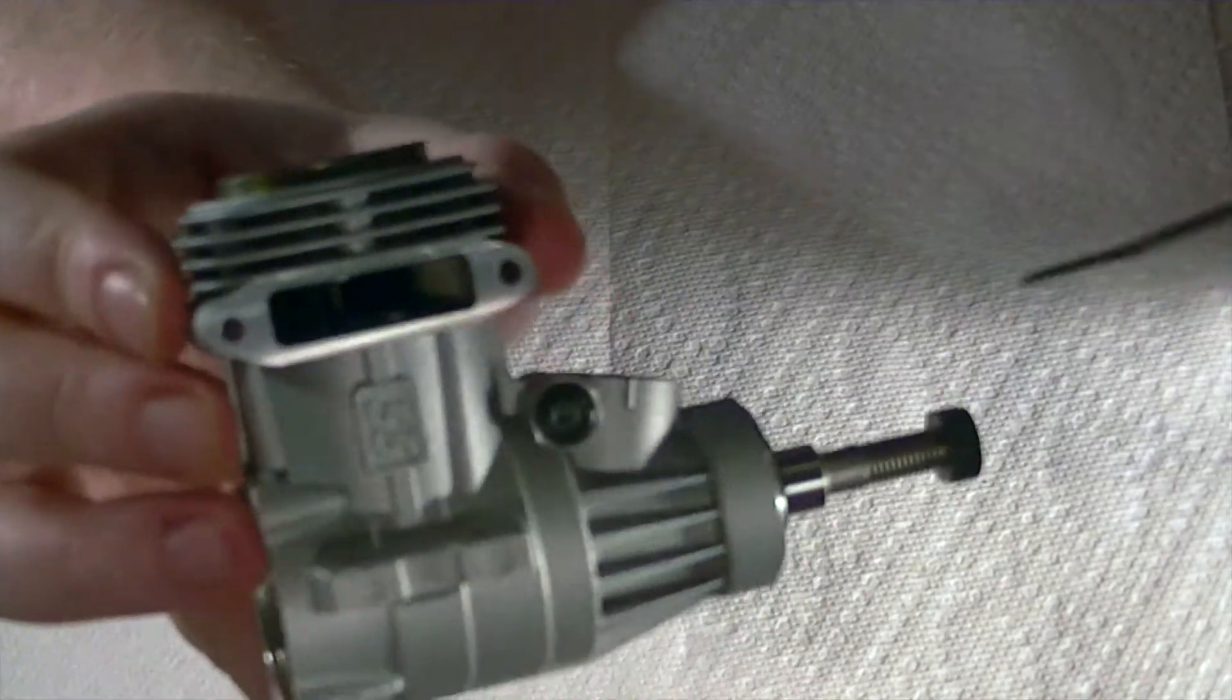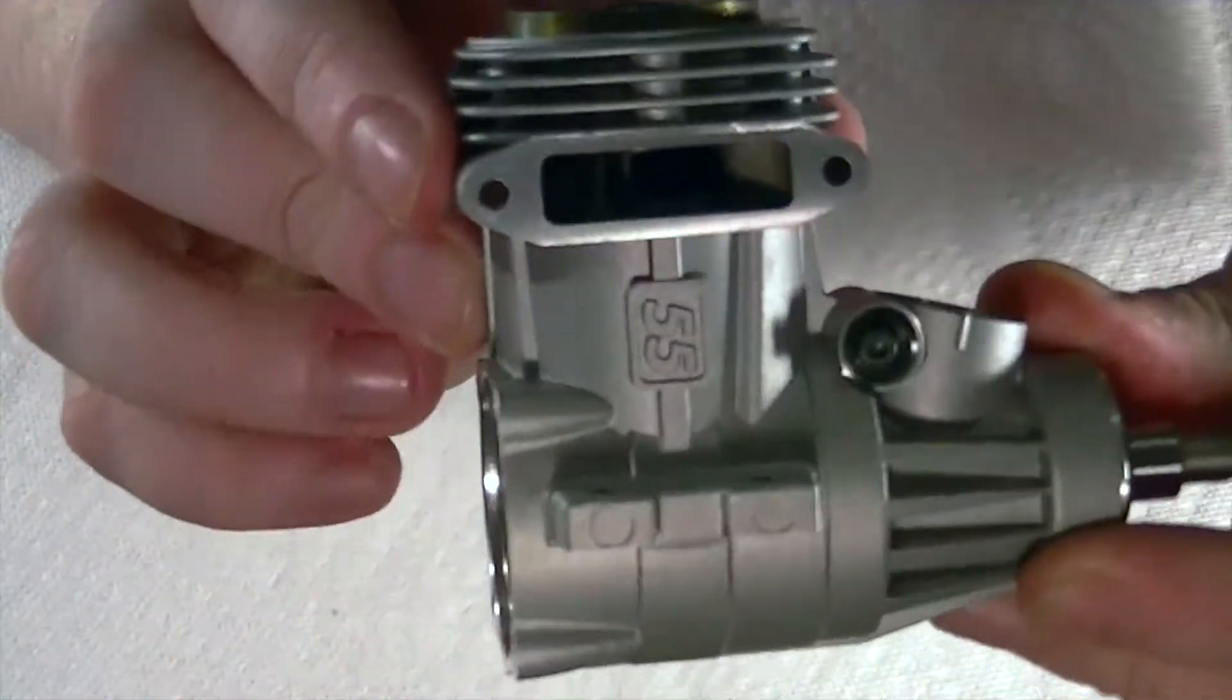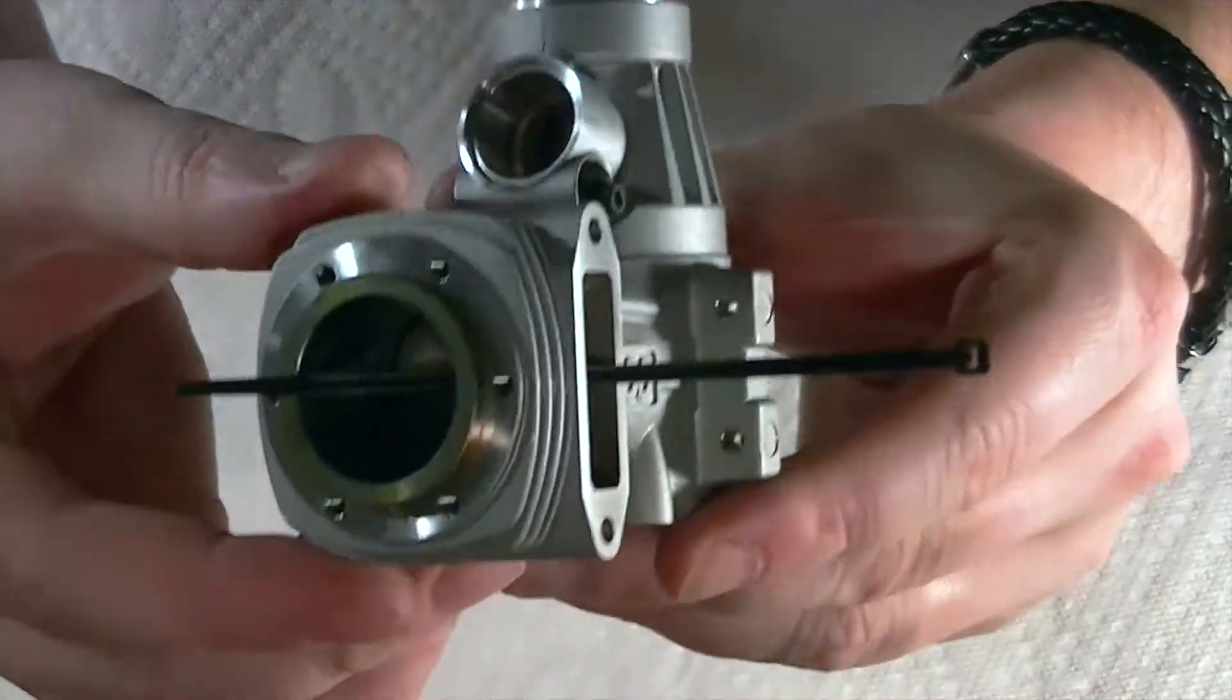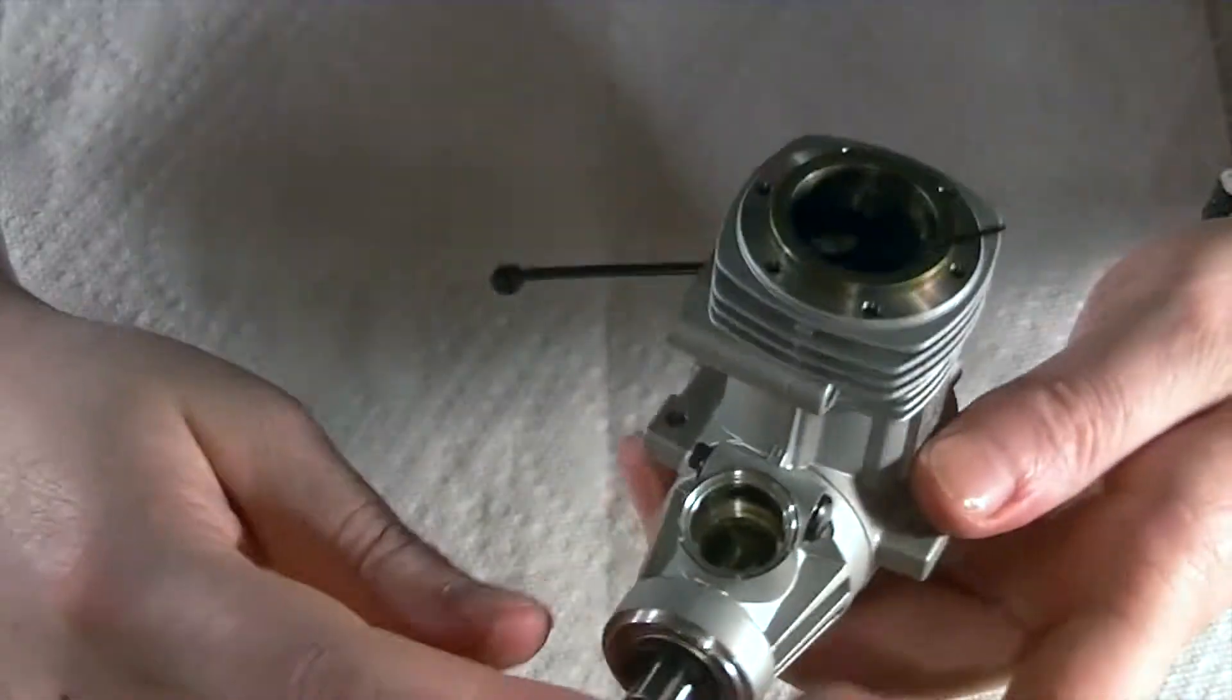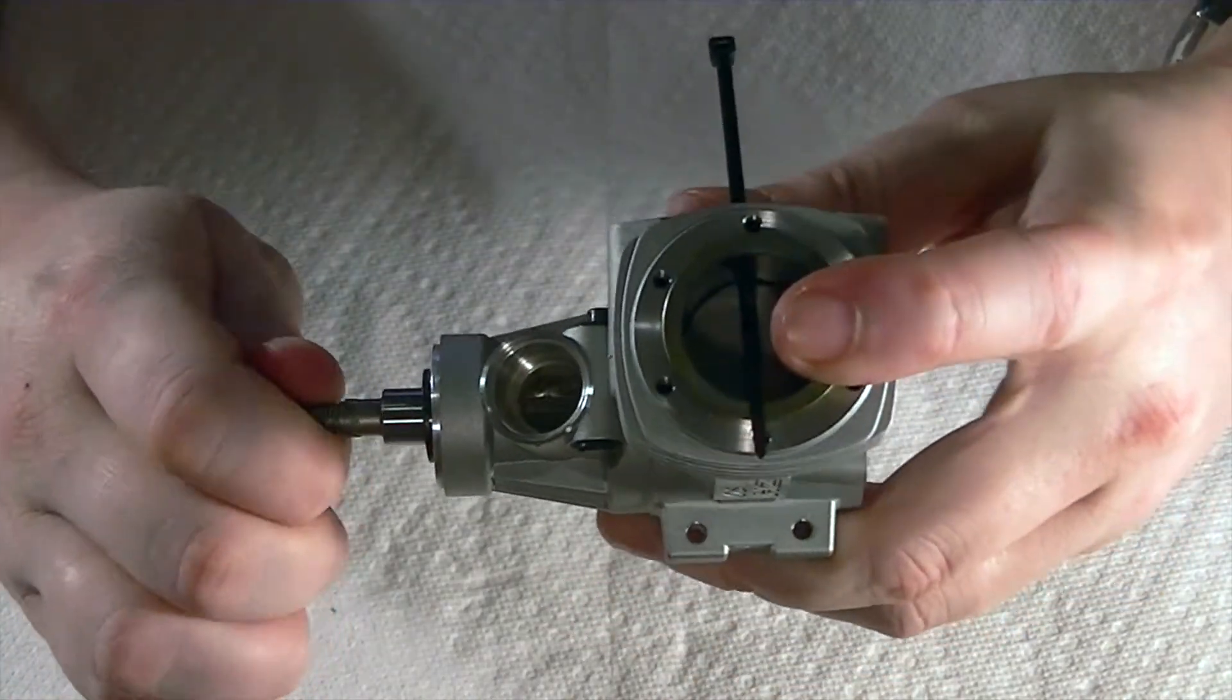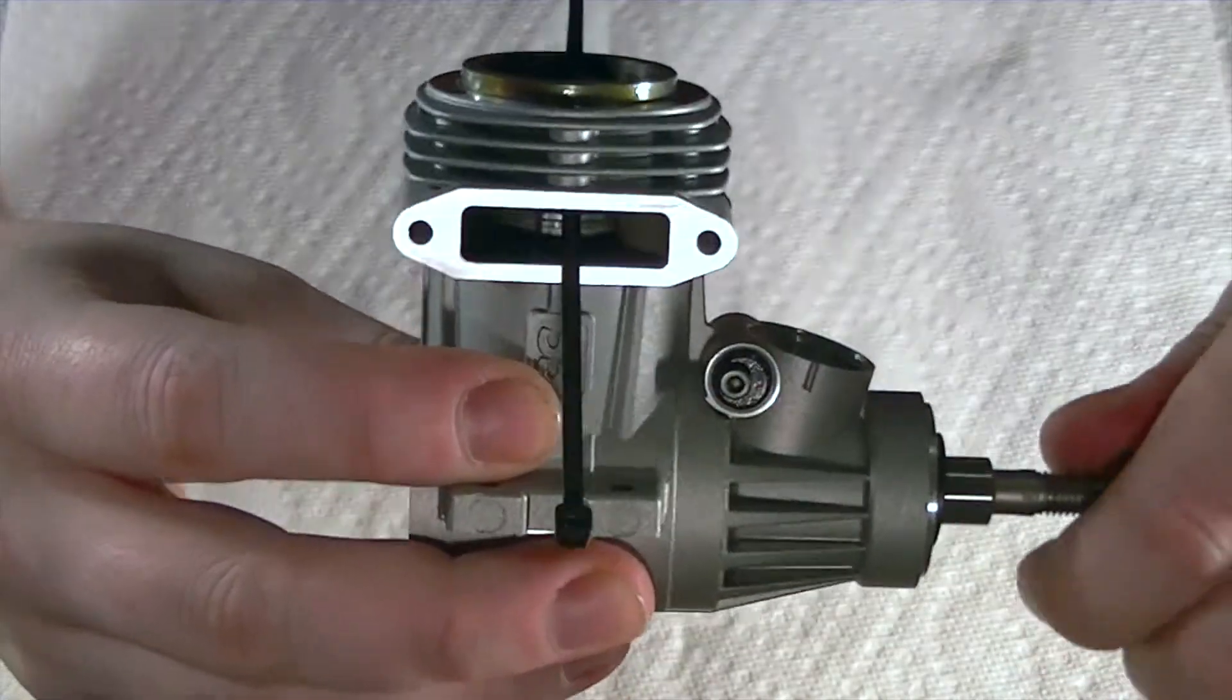You're going to take your zip tie and you'll notice, let's see if I can capture it in there. When you pull that piston all the way back, you can see that there's some holes there in the sleeve. All you're going to do guys is stick your zip tie in just like this. See that? Okay. And then what's going to happen is I'm going to turn the shaft and then the piston is going to hit that plastic of the zip tie.